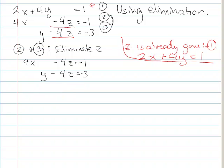So what I want to do is I want to multiply this whole equation by negative one. By multiplying by negative one, I'll solve that problem. So this one's gonna stay the same, still 4X minus 4Z equals negative one, but now I'm gonna distribute that negative one through here. So I'll get negative Y plus 4Z is equal to positive three.